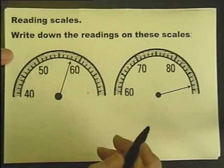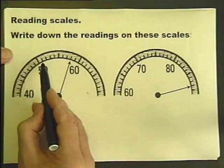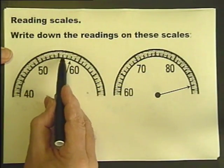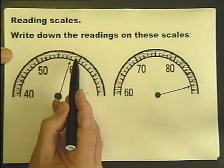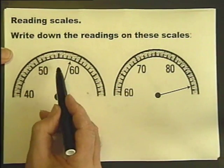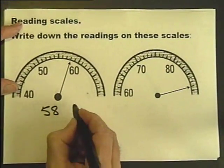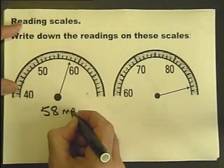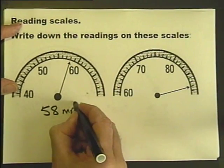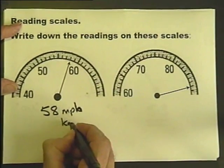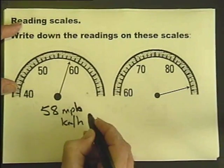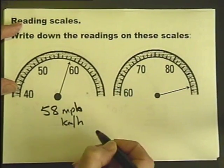What about this? What are they going up in? 1, 2, 3, 4, 5, 6, 7, 8, 9, 10. So it's just going up in 1's. So that's actually just pointing at 58. I should imagine this is in a car, so it might be that. Miles per hour or kilometers per hour.